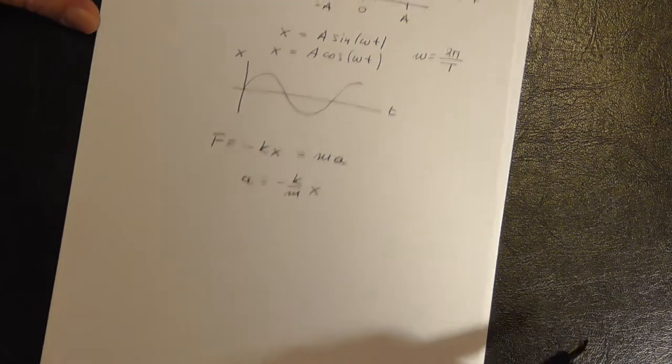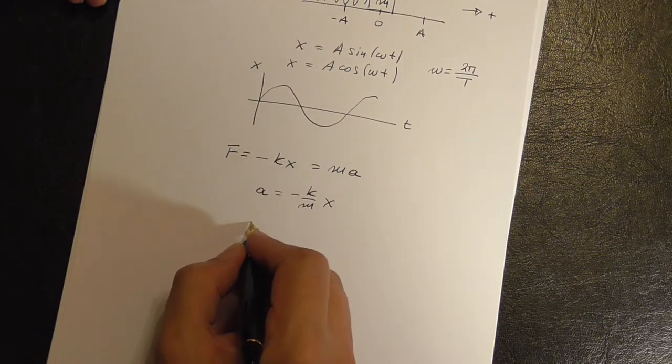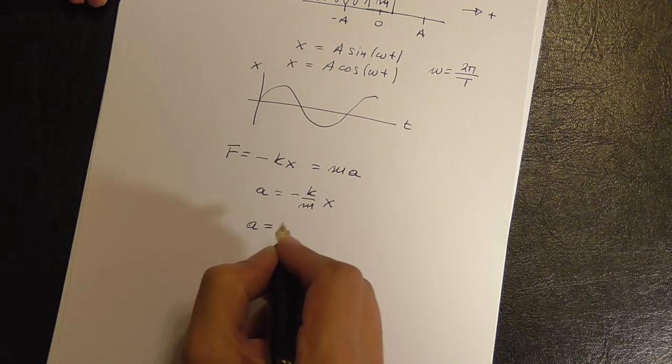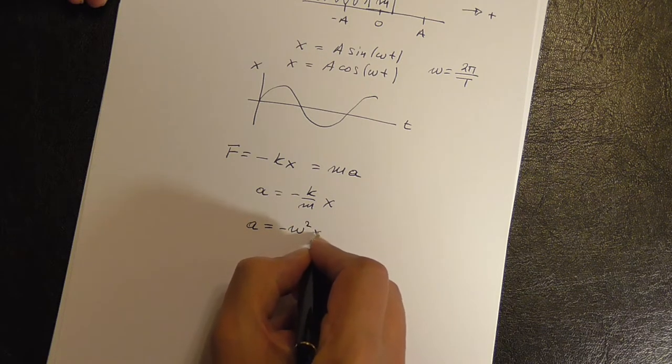So this has to have units 1 over second squared, which reminds us of omega. So we call this omega squared. So A is equal to minus omega squared X.